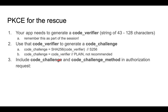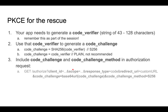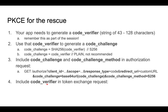Afterwards, the code challenge and the code challenge method will be included in the authorization code request. So in addition to client ID, scope, response type, and redirect URI — which would be your custom URL — your app has to include the code challenge, which is the base64 URL encoded version of the code challenge, and the code challenge method, which would either be S256 or plain. After your app receives an authorization code, it will include the code verifier when it exchanges the code for an access token.